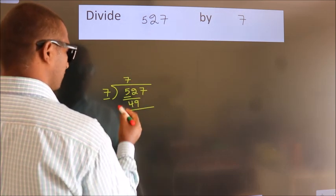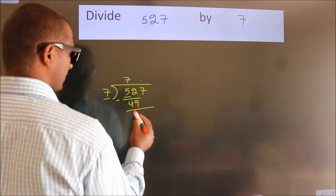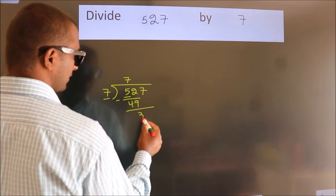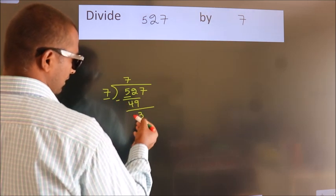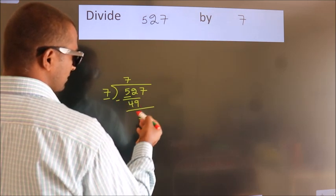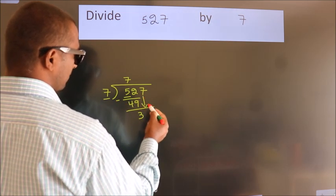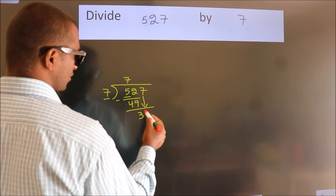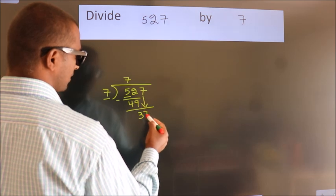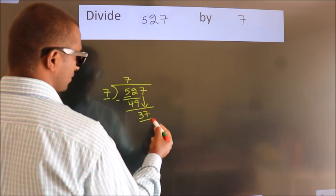Now we should subtract. We get 3. After this, bring down the beside number — bring down 7. So we have 37.